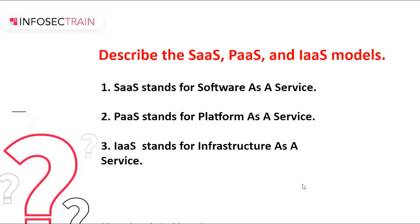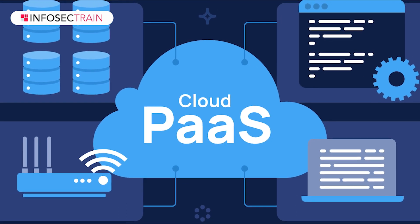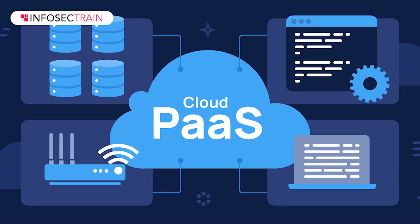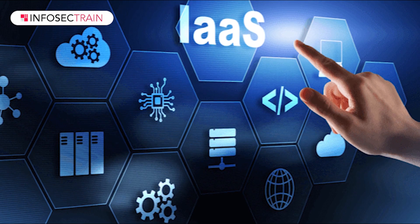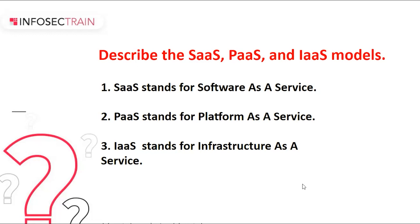Platform as a Service allows clients to use cloud services to host their own applications, which are run on provider servers within a client's own sandbox space. Clients are in charge of their applications, data, and end-user networks. Google App Engine is an example of the PaaS model. Infrastructure as a Service provides clients with hardware and remote connectivity frameworks. Only core cloud services are managed by providers; users, end-user devices, and end-user networks must all be managed by clients. Amazon Web Services is an example of the IaaS model.